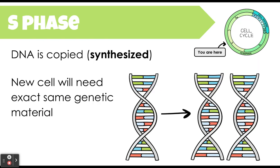After G1, the cell will enter the S phase of interphase. This is where DNA is copied. The S in S phase stands for synthesized — new DNA will be synthesized from the original DNA. It's really important that the new cell we're creating has the exact same genetic material, so that the cells are exactly the same.